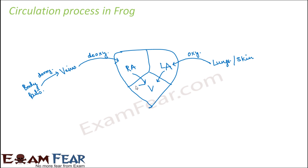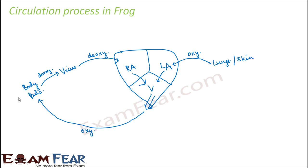The left auricle sends oxygenated blood to the ventricle, and the right auricle also sends deoxygenated blood to the ventricle. The ventricle, being the pumping chamber (VIP), pumps the blood out. Inside the ventricle there is both oxygenated and deoxygenated blood. The ventricle sends the oxygenated blood to different body parts via the arteries, and sends the deoxygenated blood to the lungs.